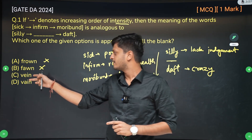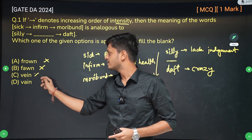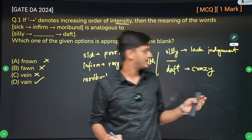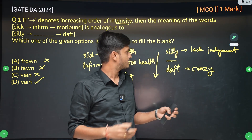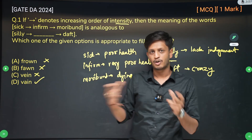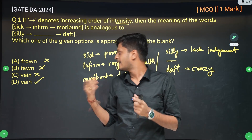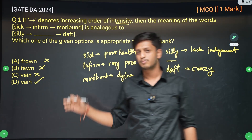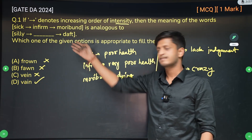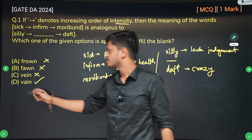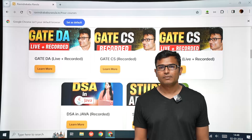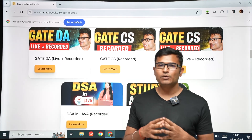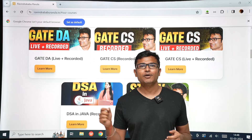Vain means somewhat crazy — like someone who lacks knowledge and judgment. So vain is the correct answer. It sits between silly and daft and is closest to what is being asked in the question.